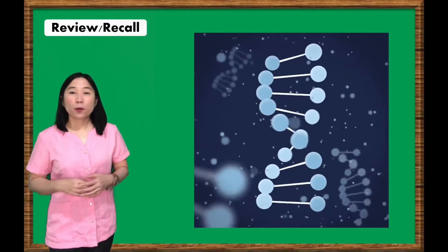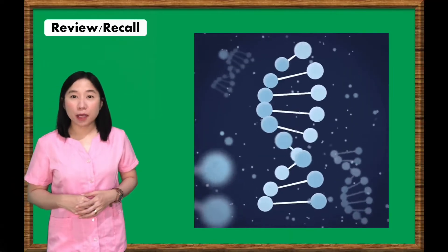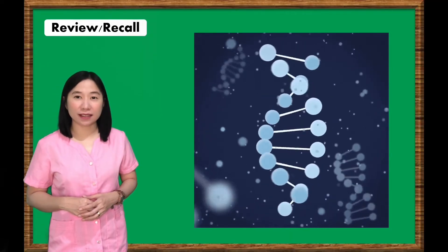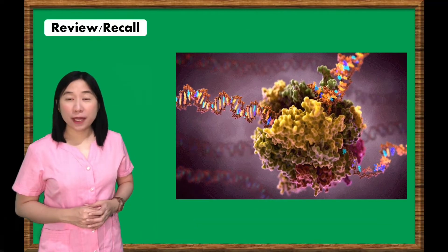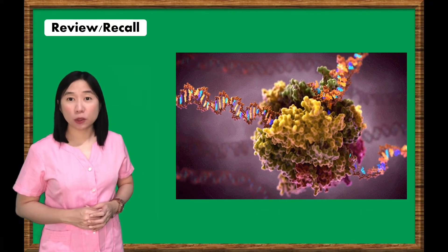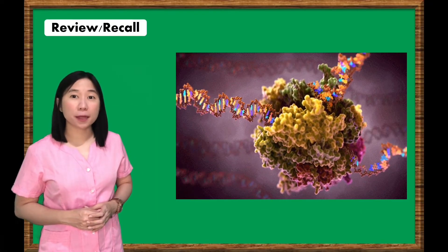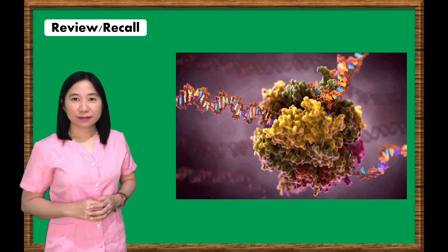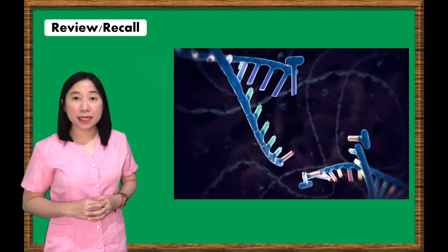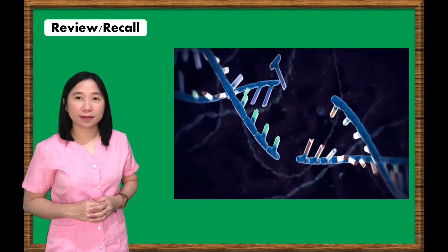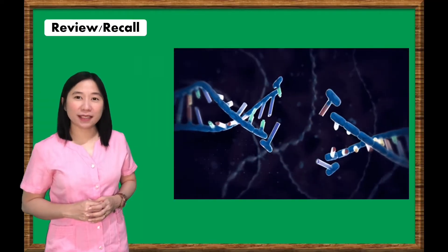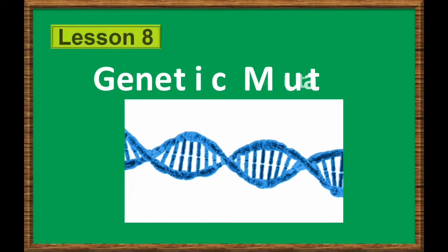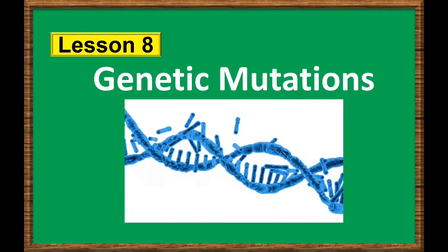You've learned so far that DNA is the chemical name for the molecule that carries genetic instructions in all living things. The sequence of the bases along the backbone serves as instructions for assembling proteins and RNA molecules. But what if something happens in the sequence of the DNA bases? Let's find out in today's lesson: Lesson 8, Genetic Mutations.